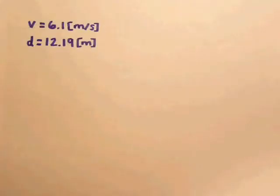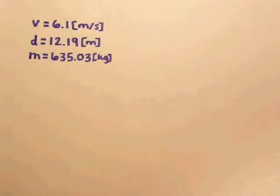Let's assume that the velocity of the horse is 6.1 meters per second. The diameter of the circle is 12.19 meters. And the mass of the horse and rider combined is 635.03 kilograms. Using these assumed calculations from the video, we can find the magnitude of centripetal force acting on the horse and rider.